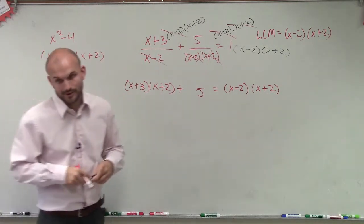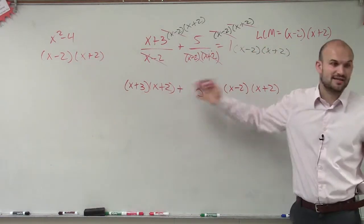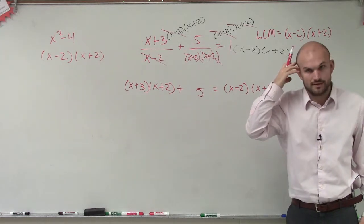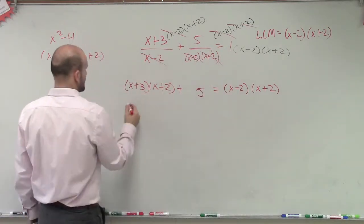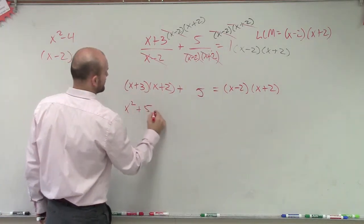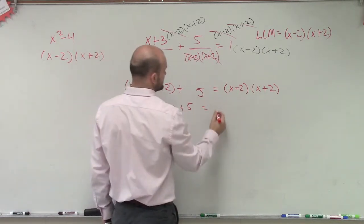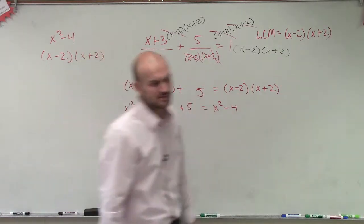All right. Now, I'm going to go a little bit quicker, guys, to keep this video a little bit shorter. You guys should know you can multiply this by box method. You can use FOIL, whatever. I'm just going to do it in my head to keep things kind of short. So if you FOIL this out, you get x squared plus 5x plus 6 plus 5 equals this factored out is going to be x squared minus 4, which we already knew is the difference of two squares.